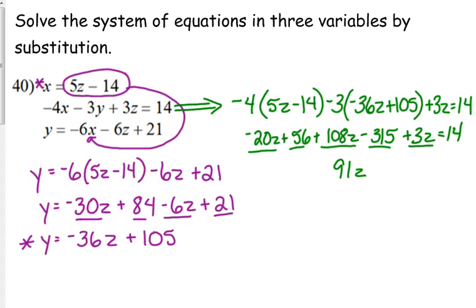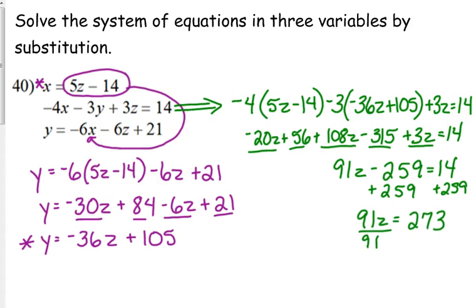56 minus 315 is 259. Minus 259. Move the 259 to the other side. 91z equals 273. Divide by 91. All of a sudden our ginormous numbers become 3. So that's z.